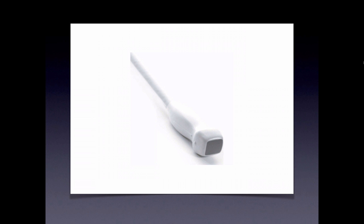Or you can use the phased array transducer. Its main benefits include better penetration and a smaller footprint, which helps to slide in between ribs easier. Newer generation systems such as the Sonosite X-port provide really excellent image resolution with the phased array transducer, making the curvilinear transducer less critical for abdominal imaging.